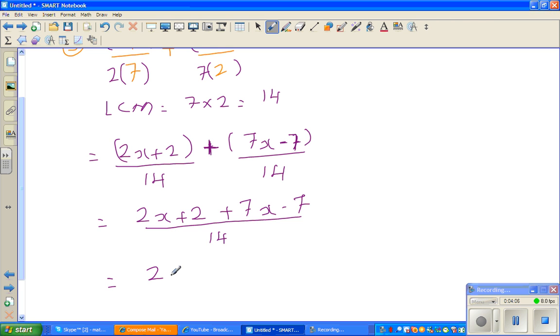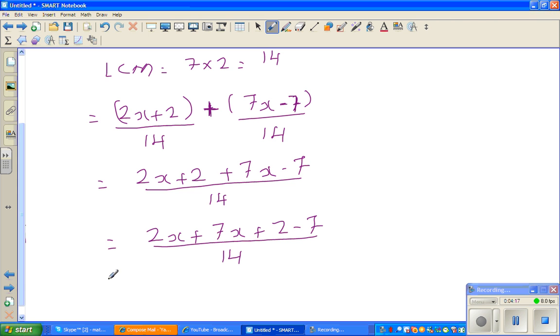So let me group the like terms. So this becomes 2x plus 7x is 9x, and 2 take away 7 is negative 5 over 14. And this is the answer.